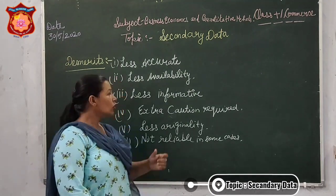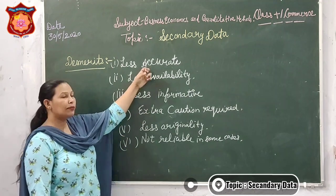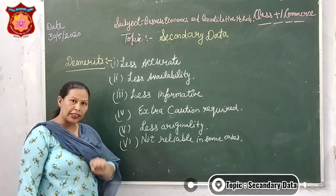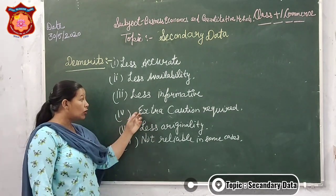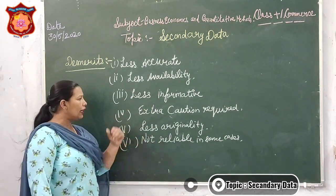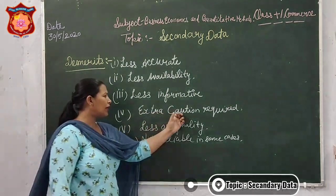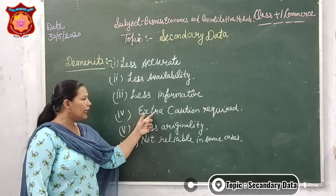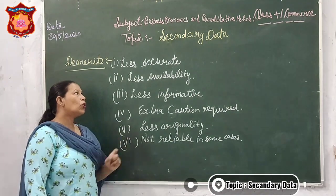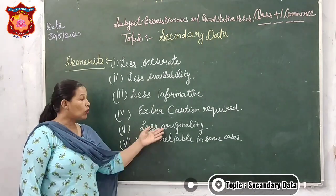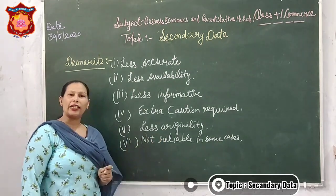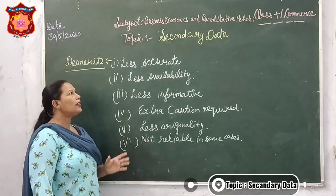These are the demerits of secondary data. It is less accurate, it may not be available on the internet, companies may not give complete information, and it is not reliable in some cases. When we use secondary data, we need to take more precautions. If secondary data is available but not used for our purpose, it is not original. So these are some demerits of secondary data.